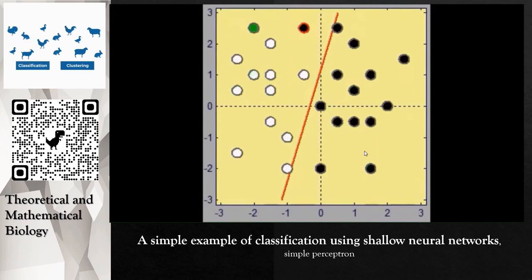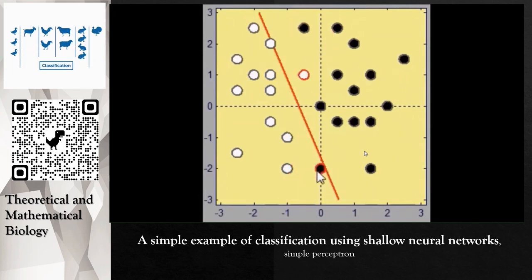You see that a straight line cannot separate this group. Any place you place this straight line, you are going to have a problem. If you place it here, it would be the best.